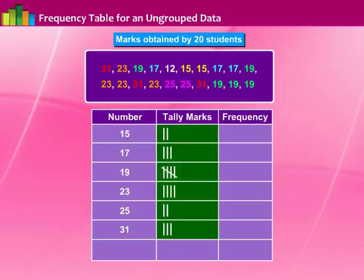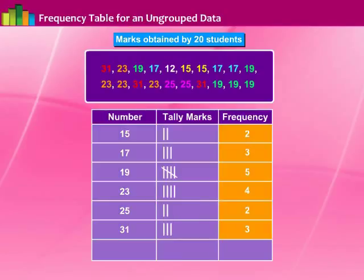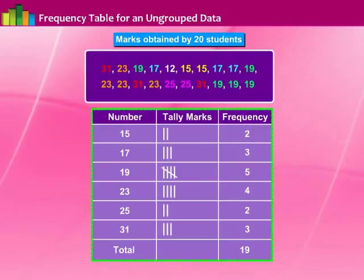Add the tally marks against the numbers and write the total in the corresponding frequency column. Now add all the numbers under the frequency column and write it against the total. Hence a frequency table is prepared for ungrouped data.